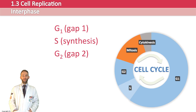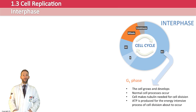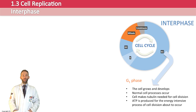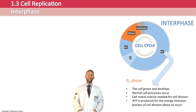Starting with the G1 phase, what happens here is that the cell grows and develops. Lots of normal cell processes occur — protein synthesis and respiration. Tubulin is made, which is going to be used for the microtubules needed later to form the spindle in mitosis. And lots of ATP is produced because the process of division that happens later on is very energy intensive.